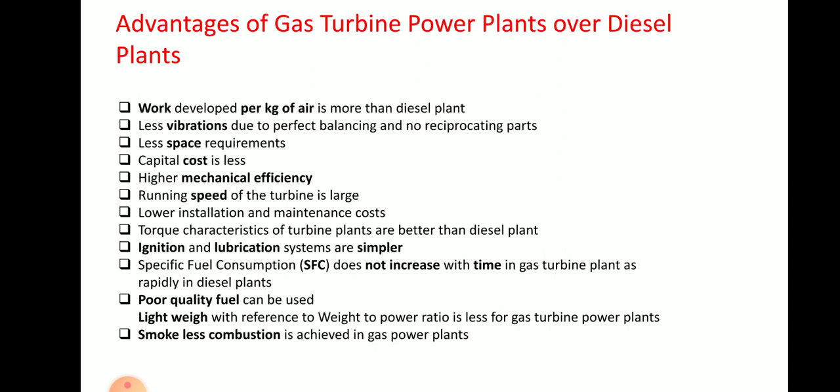Specific fuel consumption does not increase with time in gas turbine plant as rapidly as in diesel plants. Poor quality of fuel can be used, because you are taking heat only and you can burn the fuel outside. Light weight — the weight to power ratio is less for gas turbine power plants. Smokeless combustion is achieved for gas turbine power plants.